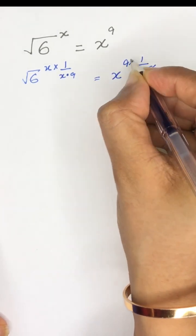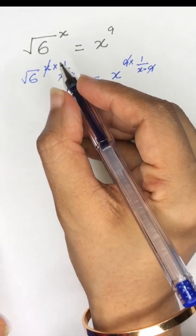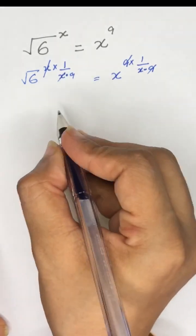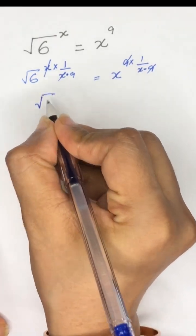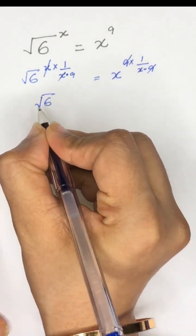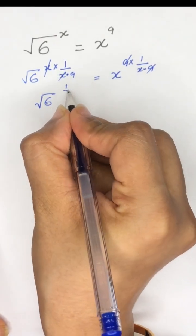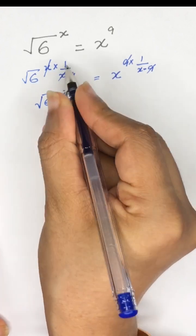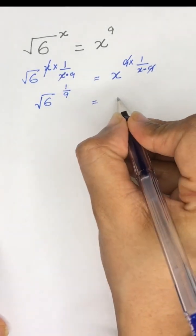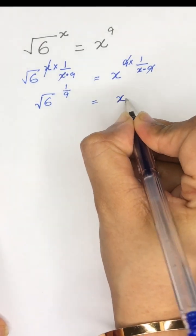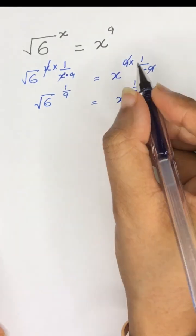The 9 and 9 will be cancelled out, and x and x will be cancelled out. It will become: square root of 6 to the power 1 divided by 9, is equal to x to the power 1 divided by x.